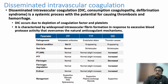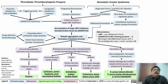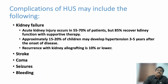TTP and HUS share similar features, but measuring ADAMTS13 levels can help differentiate them. ADAMTS13 deficiency is classically seen in TTP. In HUS, ADAMTS13 inhibition occurs but does not produce laboratory-level deficiency, so lab values will not show abnormalities in ADAMTS13 levels in HUS patients.